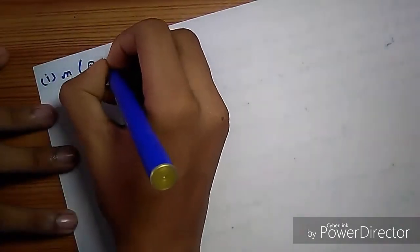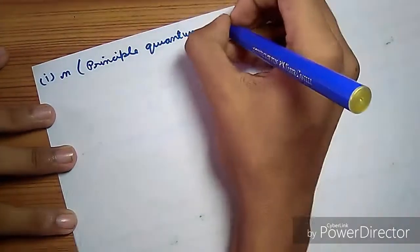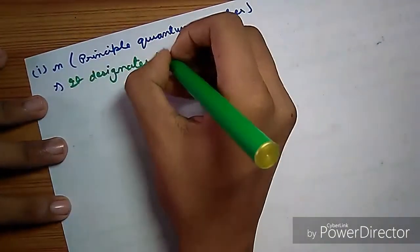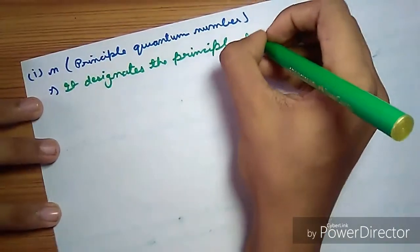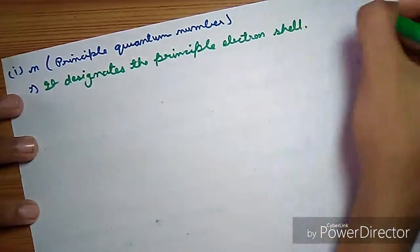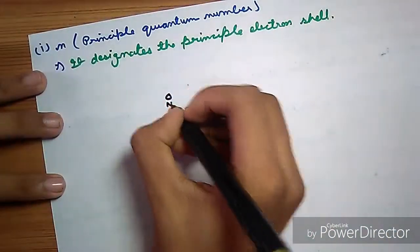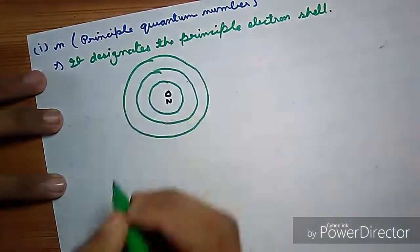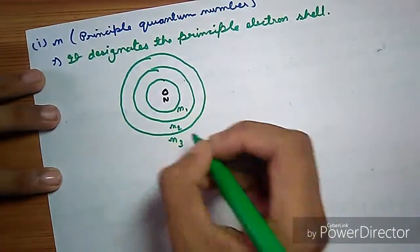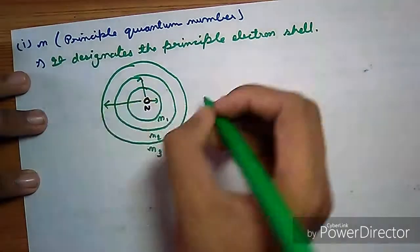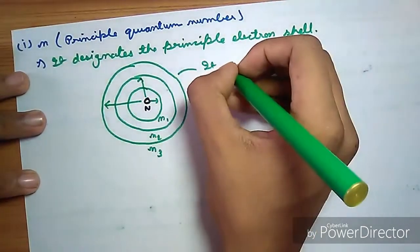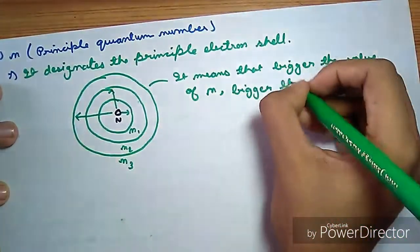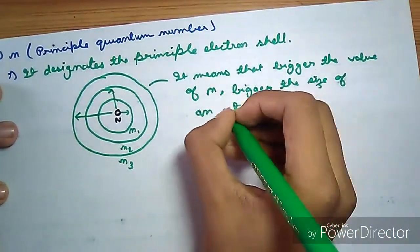Now the first one is N, principal quantum number. It designates the principal electron shell. Take an atom which has a nucleus at the center and the shells N1, N2, N3. As each number increases, shell size increases. The bigger the value of N, the bigger the size of an atom.